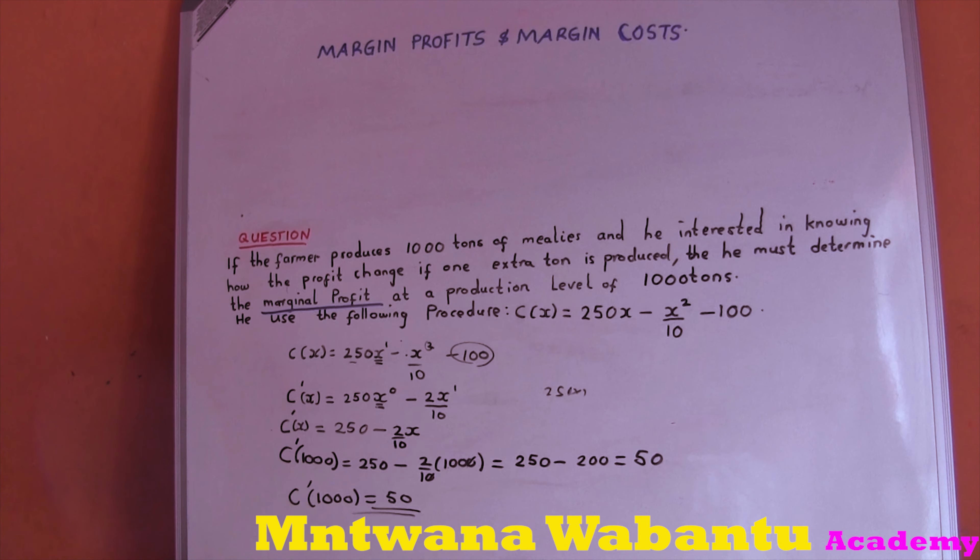For the second term, there's no written coefficient so it's 1. Take power 2 to the front: 2 times 1 equals 2, write x, power becomes 2 minus 1 equals 1, over 200. Simplify: 2 over 200 equals 1 over 100. So marginal profit P prime of x equals 15x² - (1/100)x.